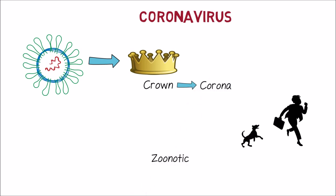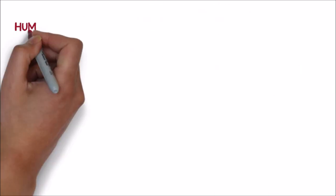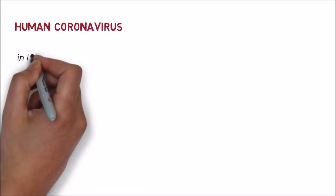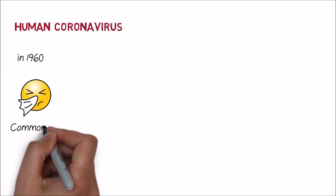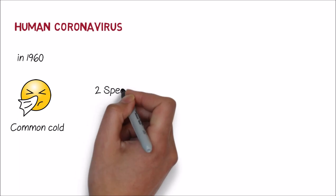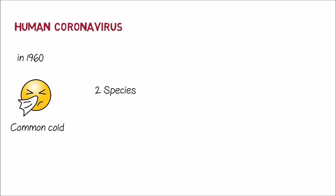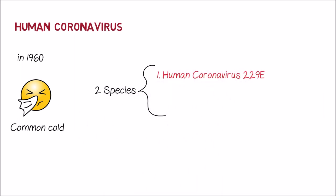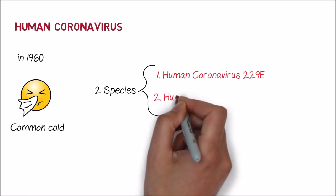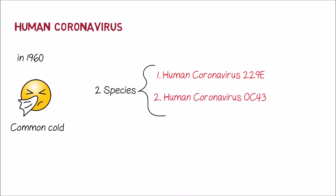It is a kind of zoonotic virus that transmits from mammals to humans. The first human coronavirus was isolated in 1960 from persons suffering from the common cold. Initially, two species were identified: human coronavirus 229E and human coronavirus OC43.